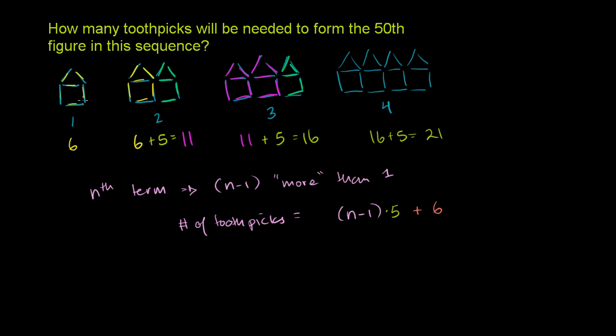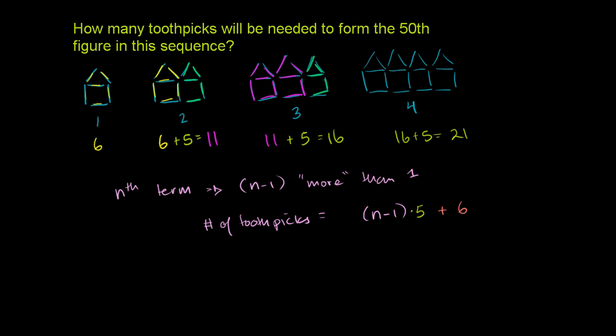Now another way, and many of you might find this easier to think about, is even in 1, you could imagine a term here. You could imagine a 0th term. Imagine a 0th term. And the 0th term would just be kind of a left wall of the house, or in this case, the left toothpick of a house. And then the first one, you're adding 5 toothpicks to that. And the second one, you're adding 5 toothpicks to that. And when you think about it this way, it actually becomes a little simpler to think in terms of n.